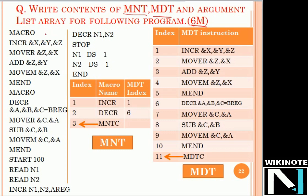The macro keyword is followed by the prototype statement — the name of the macro — and here we are passing three formal parameters: X, Y, and Z. The work of this macro is to take the value from memory location X, increment it with Y, and store it back. Register Z is used for this operation. We move the memory location into register Z, add Y to perform the increment, and then move the result in Z back into variable X. These are the model statements written with respect to the formal parameters, and the macro ends.